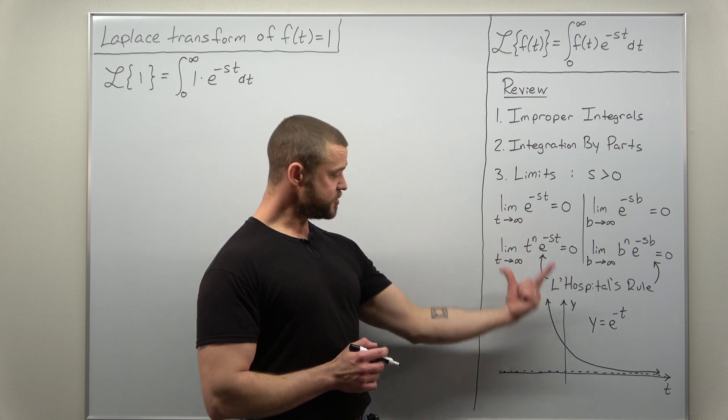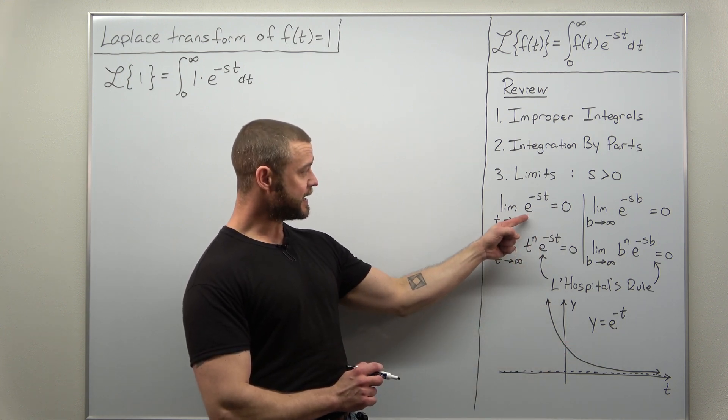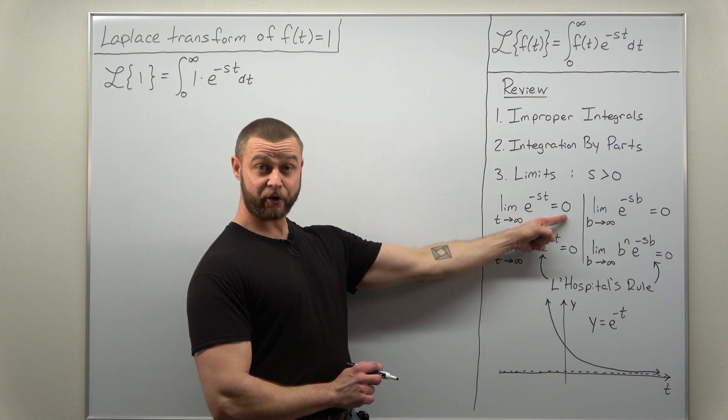The first one here you can understand graphically from a decreasing exponential. e to the negative st as t approaches infinity, that approaches zero.